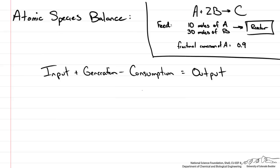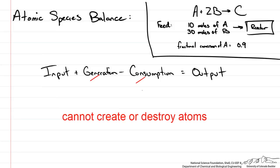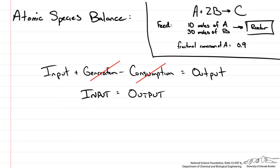Let's take a look at the atomic species balance. For a steady state reaction in terms of atomic species, we know that we cannot consume or generate atoms, so this simply becomes input equals output. We don't really care about what happens within the reactor — we just care about what we are putting into it and what comes out.